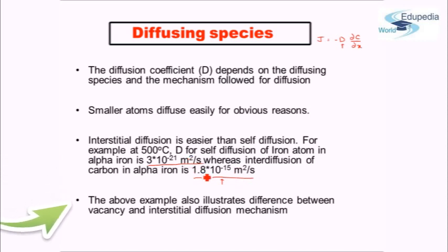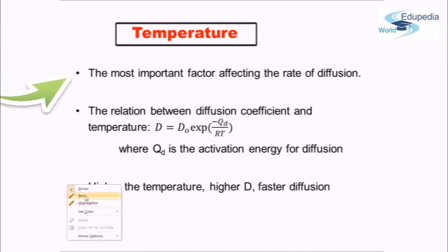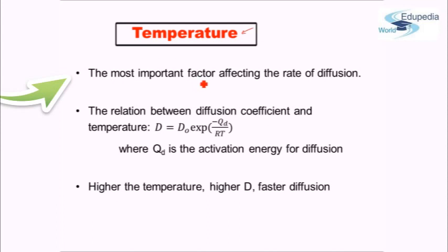This example also gives insight about vacancy and interstitial diffusion mechanisms. Temperature is the most important factor while defining the rate of diffusion, because the diffusing mechanism is not under our control. If we have a material in which diffusion needs to take place, the species and mechanism is fixed — you cannot alter the material just to meet your process requirements. But what you can alter is the temperature under which the diffusion process will take place, so this is something we as a user can control.